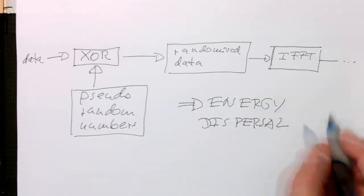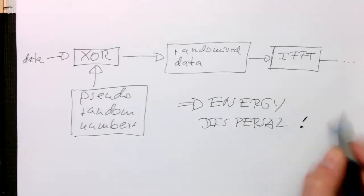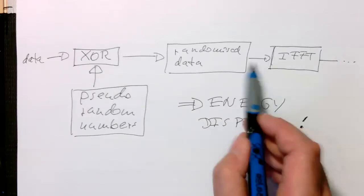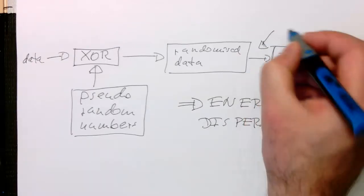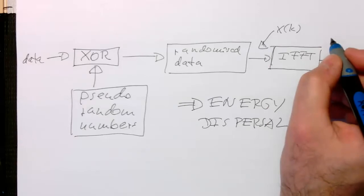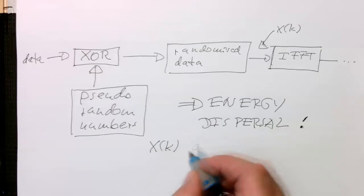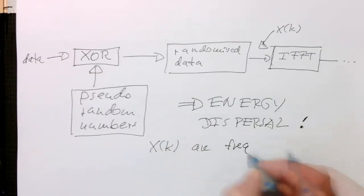So why is this called energy dispersal? This means that, remember, the output here - these are different frequencies. X of k, these are frequency coefficients here. So x of k are frequency coefficients, or frequency samples.